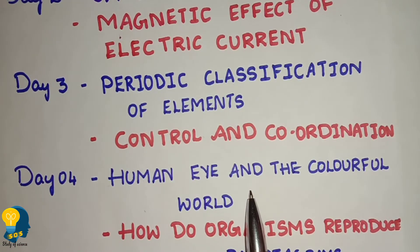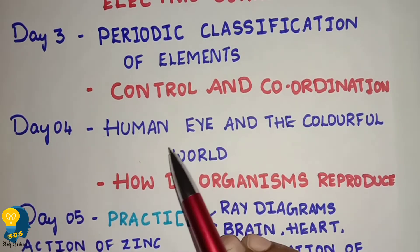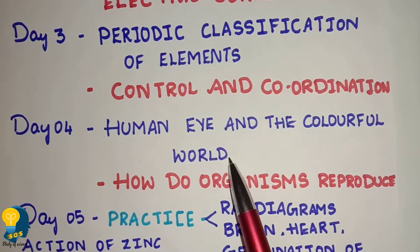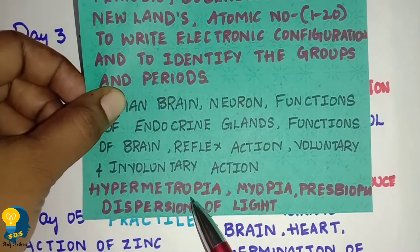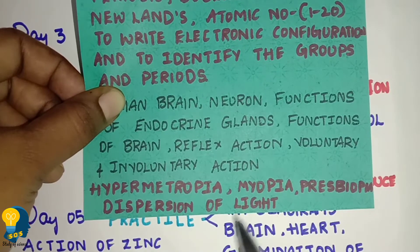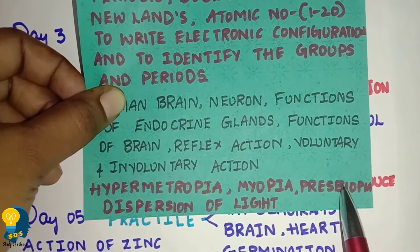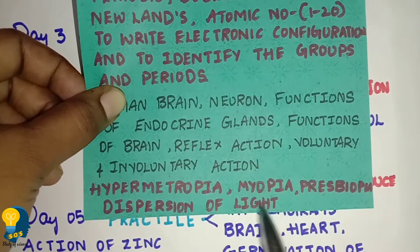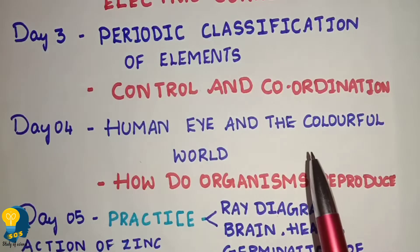Day four — study Human Eye and the Colorful World. In this lesson, focus on hypermetropia, myopia, presbyopia, and dispersion of light. These concepts have easy answers explained in previous sessions.